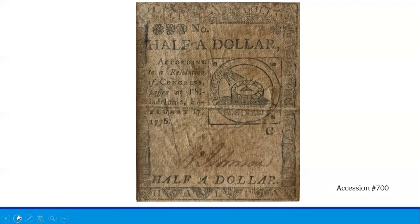We can also see at the bottom of this bill one of the handwritten signatures that were on continentals, and this also gives us an example of the intricate borders that we would see.